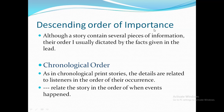Descending order of importance means that broadcast journalists must first figure out the most significant piece of information to tell the listeners, and it goes in the story's lead. Then the journalist must anticipate what else the listeners want to know — this information makes up the body of the story. Although a story may contain several pieces of information, their order is usually dictated by the facts given in the lead.